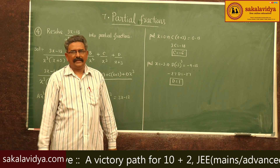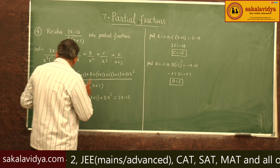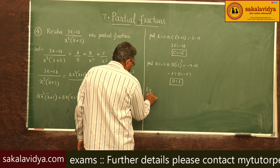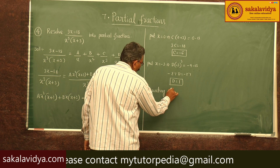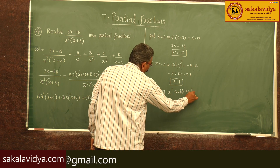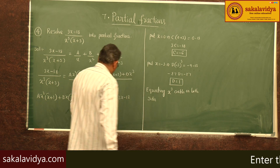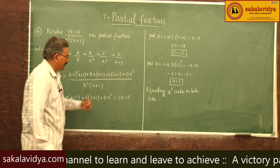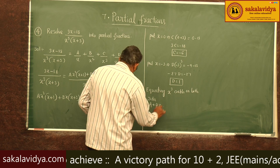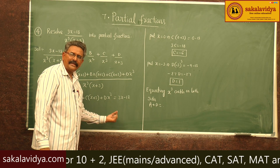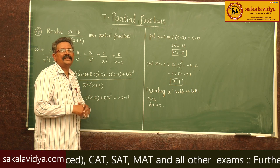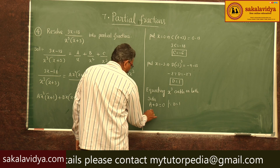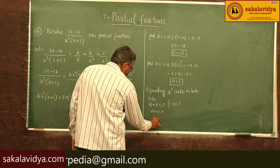Now we cannot make any further substitutions. So equating x cubed coefficients on both sides: the x cubed coefficient comes from A x squared times x giving A, and from D x cubed giving D. On the right-hand side there is no x cubed term, so its coefficient is 0. Therefore A plus D equals 0. Since D equals 1, A plus 1 equals 0, so A equals minus 1.